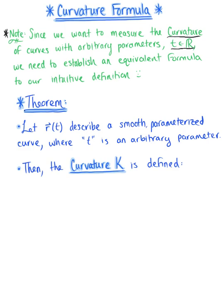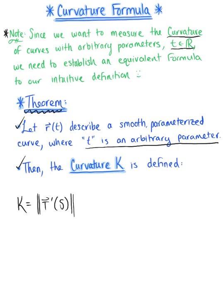Here is the theorem for our computation definition of curvature. We begin by letting vector r of t describe a smooth parametrized curve where t is an arbitrary parameter — any parameter our little hearts desire. Then the curvature kappa is defined as follows. Let's quickly recall: our intuitive definition for curvature is the magnitude of the rate at which the unit tangent vector changes with respect to arc length.